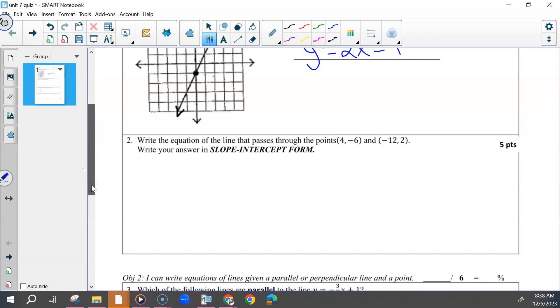Then for number two, you have to find the slope. So using our slope formula, 2 minus negative 6, or plus 6, either or, it doesn't matter, all over negative 12 minus 4 would give us positive 8 over negative 16. That can be simplified as negative 1.5.